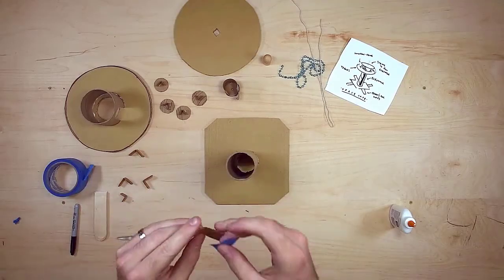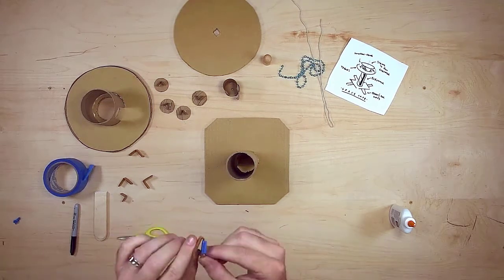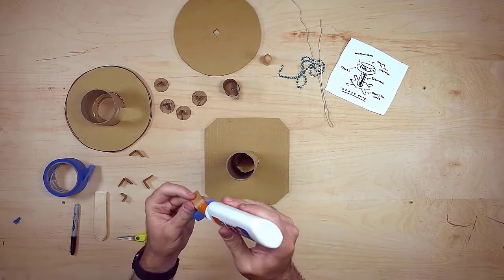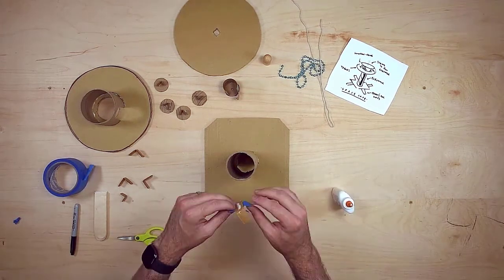Next, I'm going to make some supports for the cafe to sit on so that it stays on the top of the elevator tube. To do this, I'm going to again just bend over some cardboard strips and tape them to the side of the elevator tube.